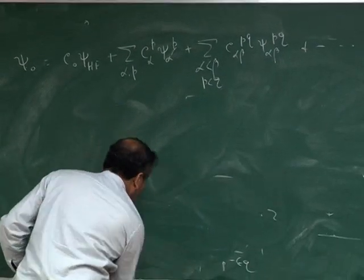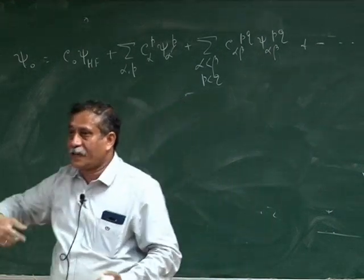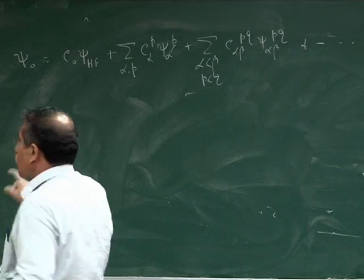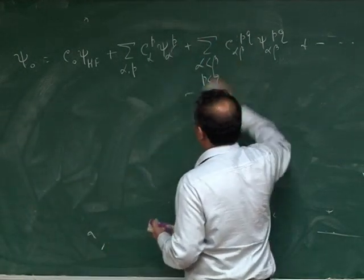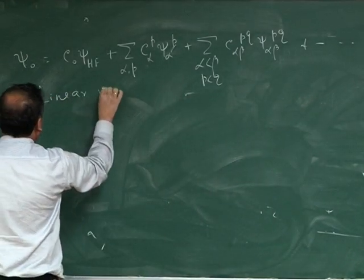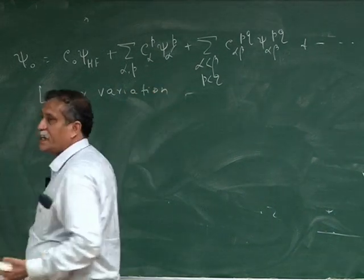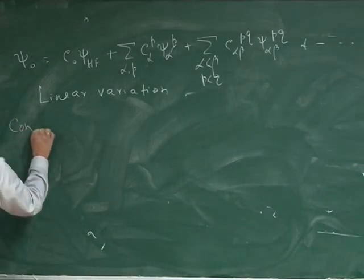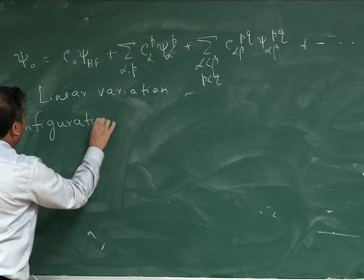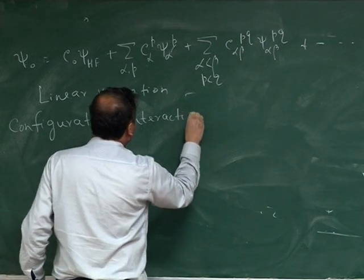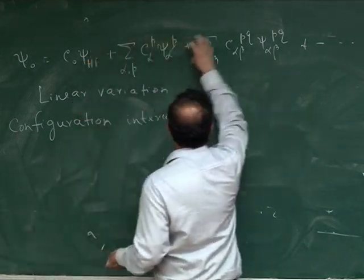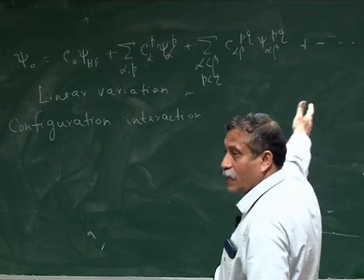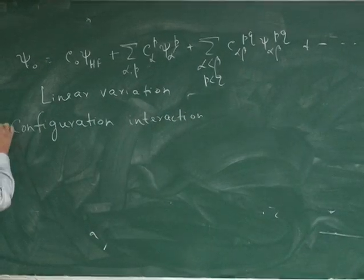And then again apply variation method. So apply variation method to obtain these coefficients. So Hartree-Fock, first single determinant itself was variationally optimized. So get Hartree-Fock. Now improvement is also done by linear variation method. This is a very simple thing because the orbitals are no longer changing. Only thing that is changing is the coefficients. And this is called the linear variation method. By applying these, I will of course get improvement to the energy.